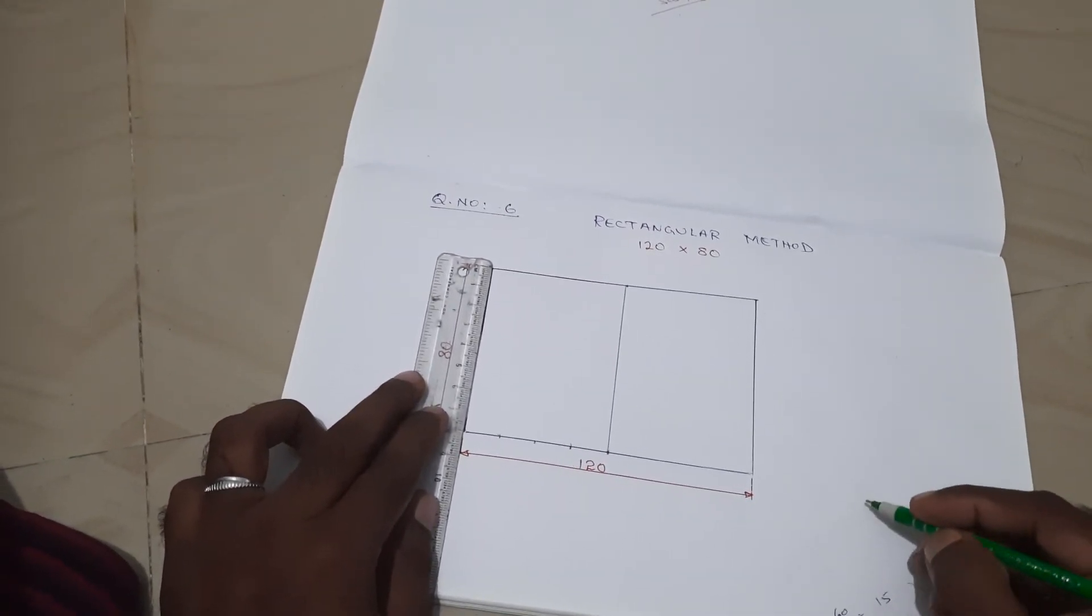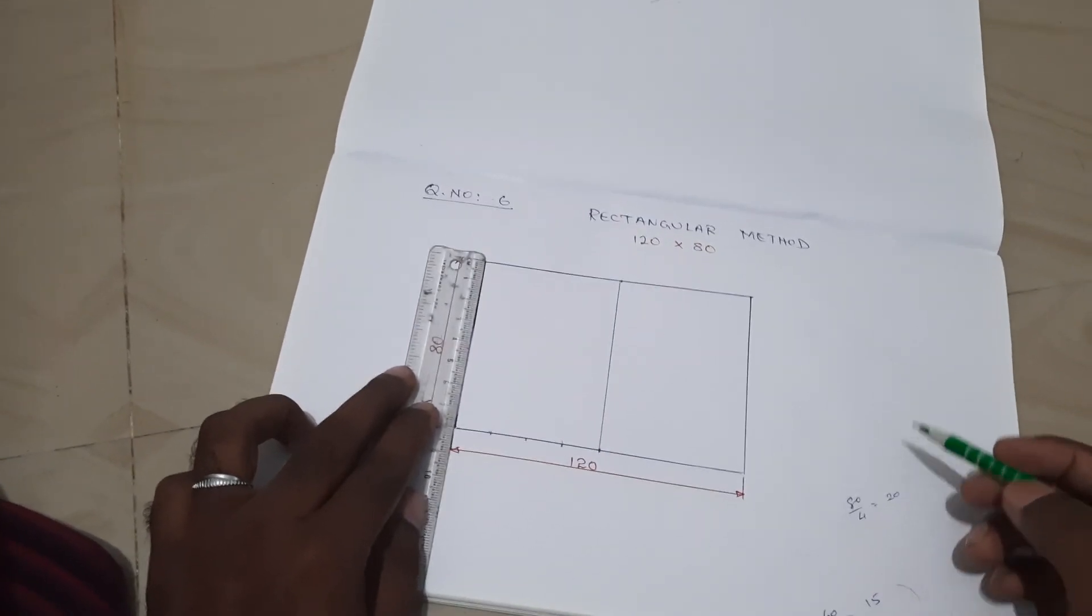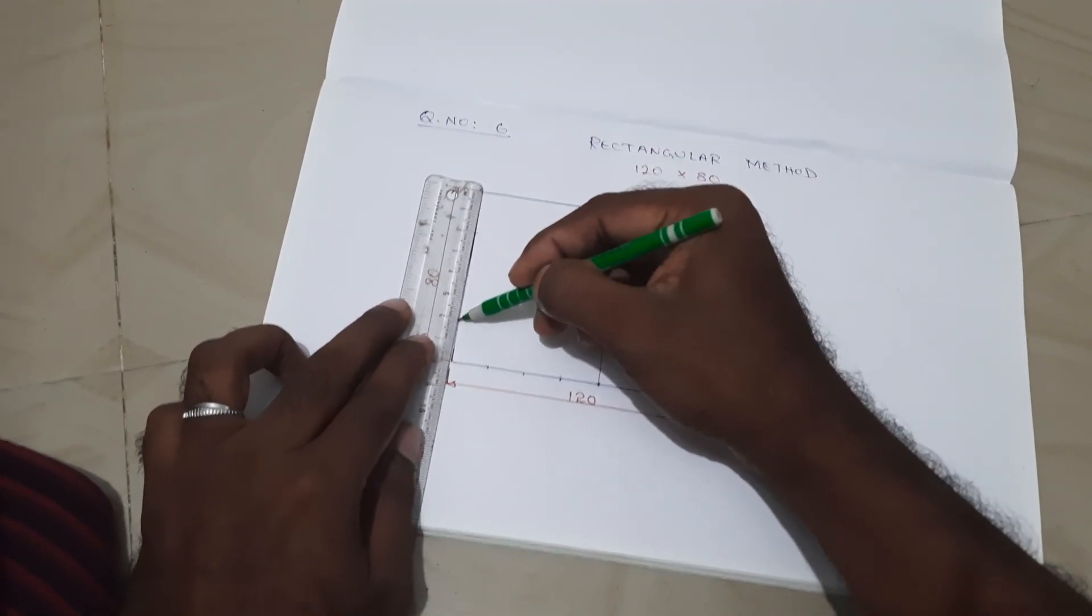So 80 divided by 4, you will get 20 mm each point. Okay, 20, 40, and 60.